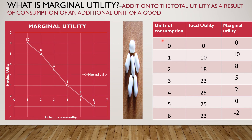We translate this table — taking the first column and the third column only — to draw the marginal utility diagram. We plot units of consumption on the x-axis against marginal utility on the y-axis. At the first unit, marginal utility is 10; at the second, 8; at the third, 5; at the fourth, 2; at the fifth, marginal utility is 0, so the point touches the x-axis. At the sixth unit, it goes into the negative quadrant at negative 2. When we join all these points, we get the marginal utility curve.